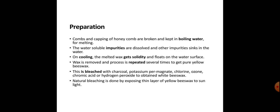Wax is removed and the process is repeated several times to get pure yellow beeswax. This is bleached with charcoal, potassium permanganate, chlorine, ozone, chromic acid, or hydrogen peroxide to obtain white beeswax. Natural bleaching is done by exposing a thin layer of yellow beeswax to sunlight.